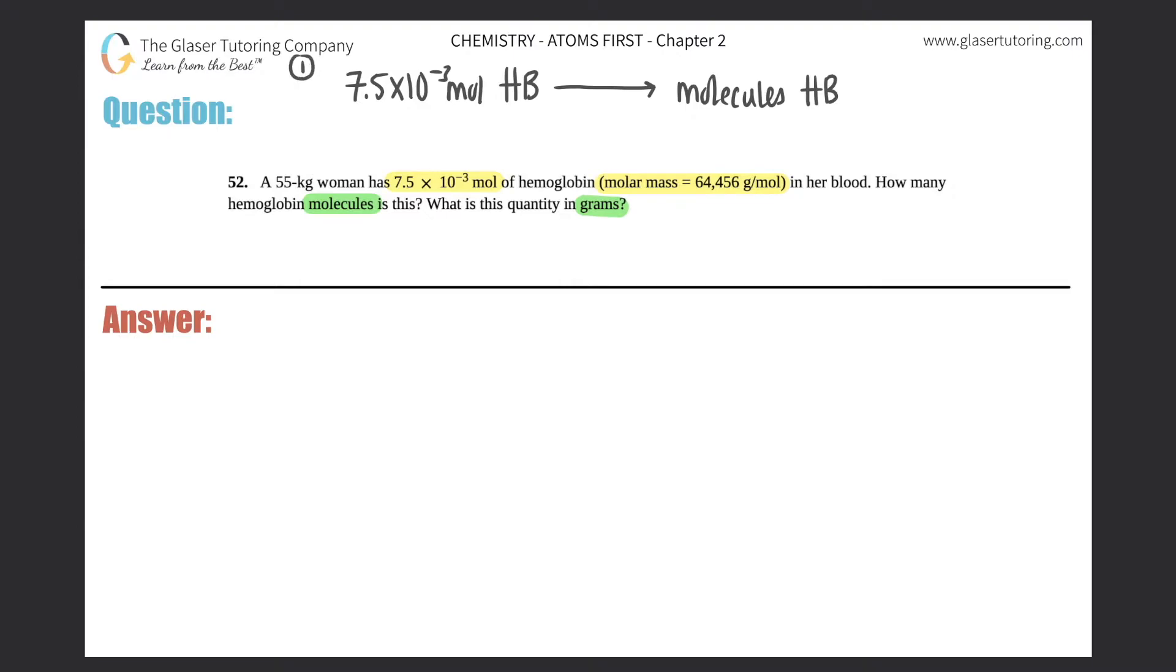And then they want us to take the same number, 7.5 times 10 to the negative third moles of hemoglobin. And they want to find out how many grams of hemoglobin this is. Okay, so essentially there's two questions here.